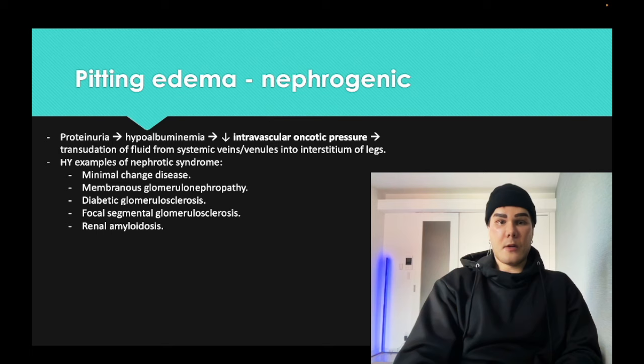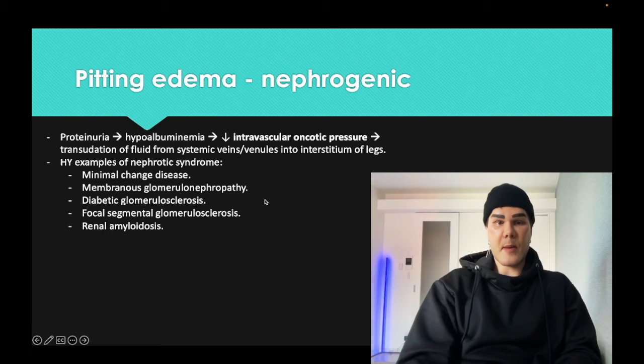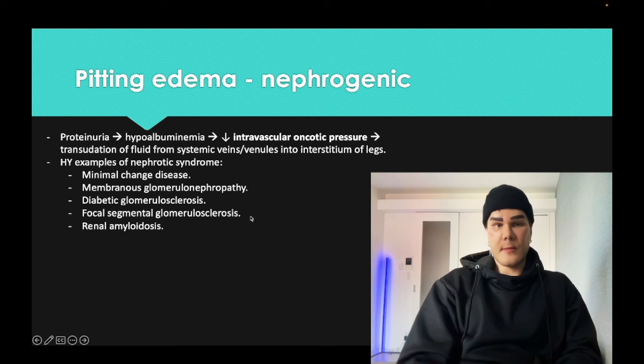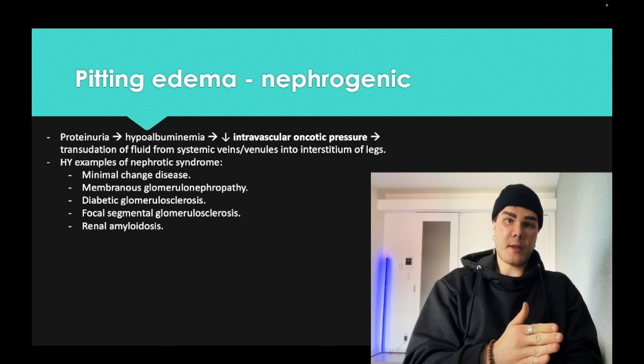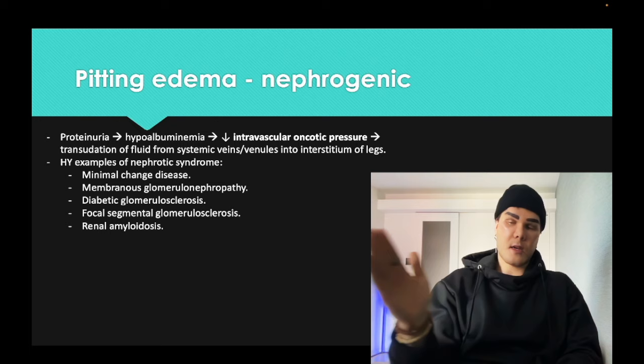Diabetic glomerulosclerosis: in diabetes, you get non-enzymatic glycosylation of the glomerular membrane, hyperfiltration, and thickening of that membrane, ultimately with loss of the size and charge barrier. Kimmelstiel-Wilson nodules composed of hyaline, and focal segmental glomerulosclerosis (FSGS). FSGS is the answer for nephrotic syndrome in sickle cell — a sickle cell patient with no blood in the urine and peripheral edema means FSGS, whereas dark urine means renal papillary necrosis. FSGS can also be caused by HIV and heroin use.